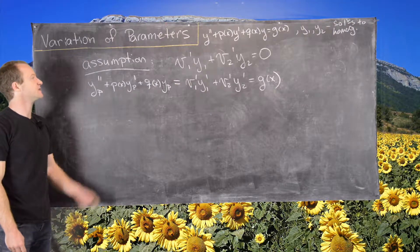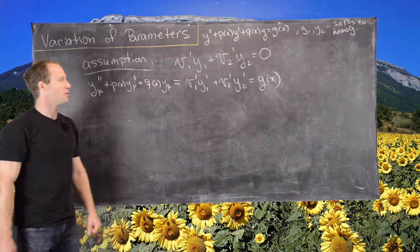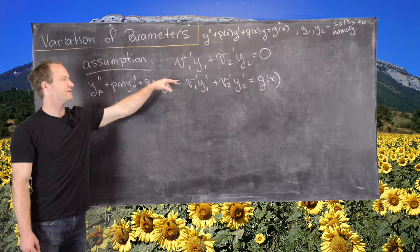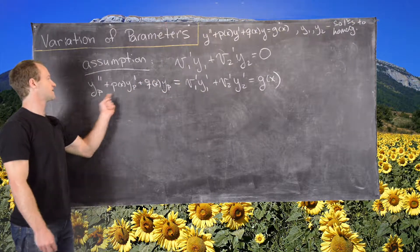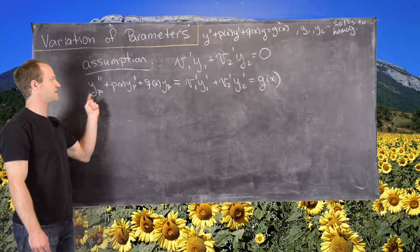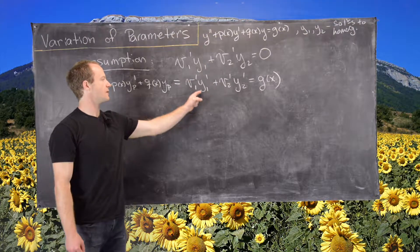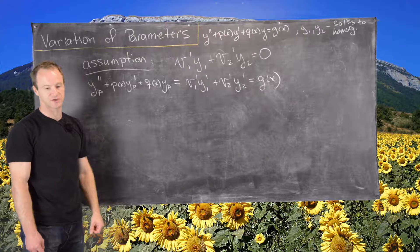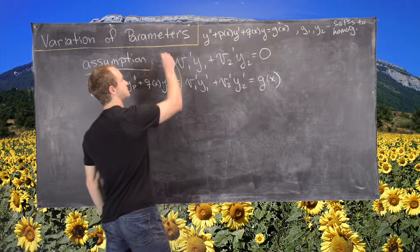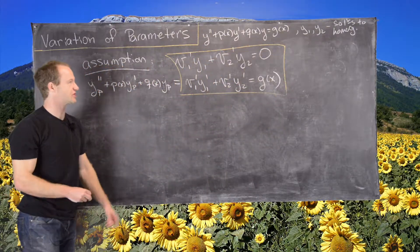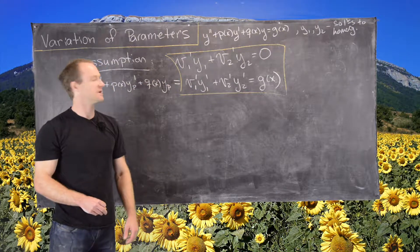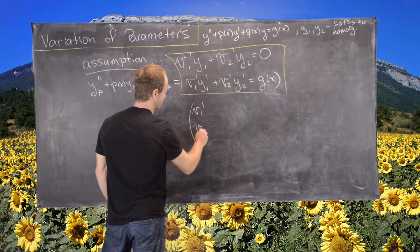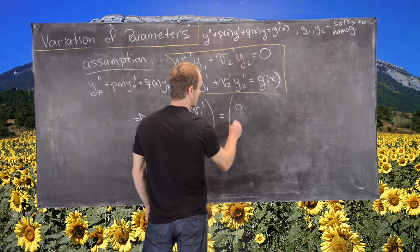Summarizing the result of our assumption: we have two equations. First, v1′·y1 + v2′·y2 = 0 (our assumption). Second, v1′·y1′ + v2′·y2′ = g(x) (from the differential equation). This gives a system of equations for v1′ and v2′, which we can write as a matrix equation with the vector (v1′, v2′) on one side, the vector (0, g(x)) on the other, and the matrix with columns (y1, y1′) and (y2, y2′).